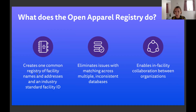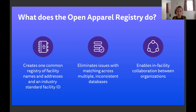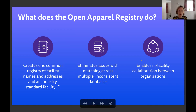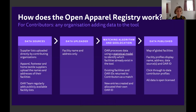Anyone who has worked with data on apparel supply chains will know that it's often scattered around in all sorts of different databases of varying quality in different formats. By consolidating all of that information in a consistent format in one central repository, we're able to facilitate collaboration between different organizations — something that's crucial to so many different issues in apparel supply chains, not least modern slavery and people trafficking.